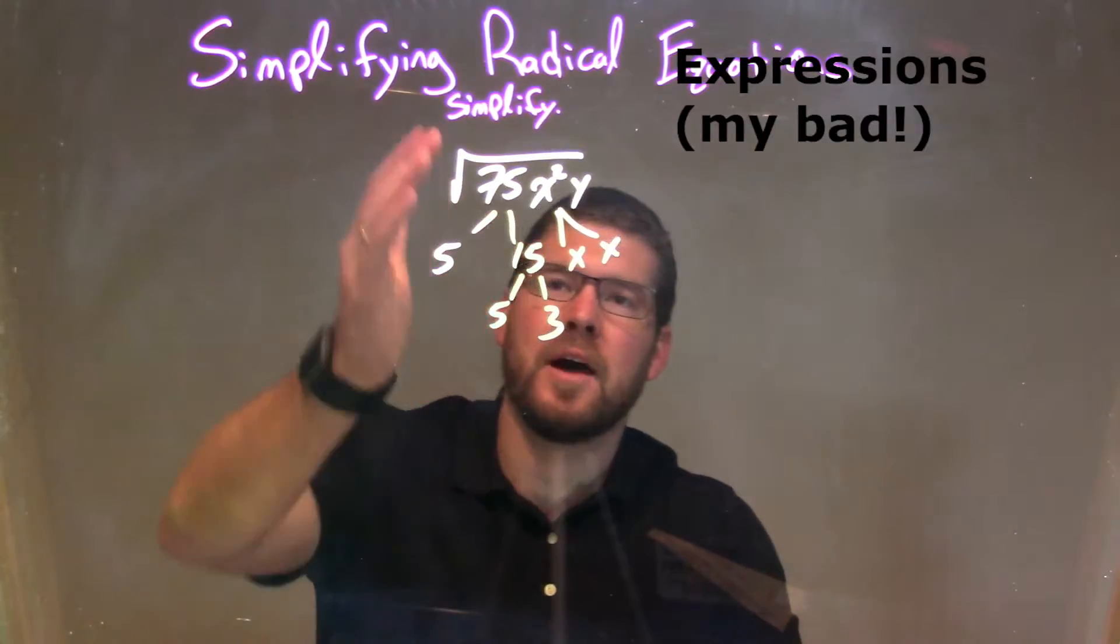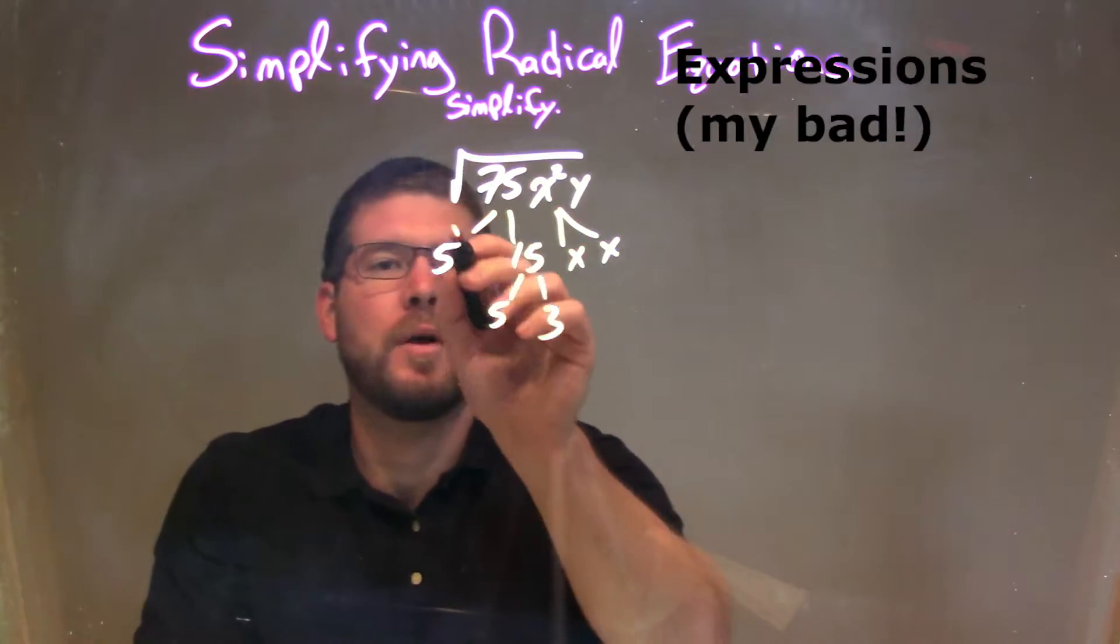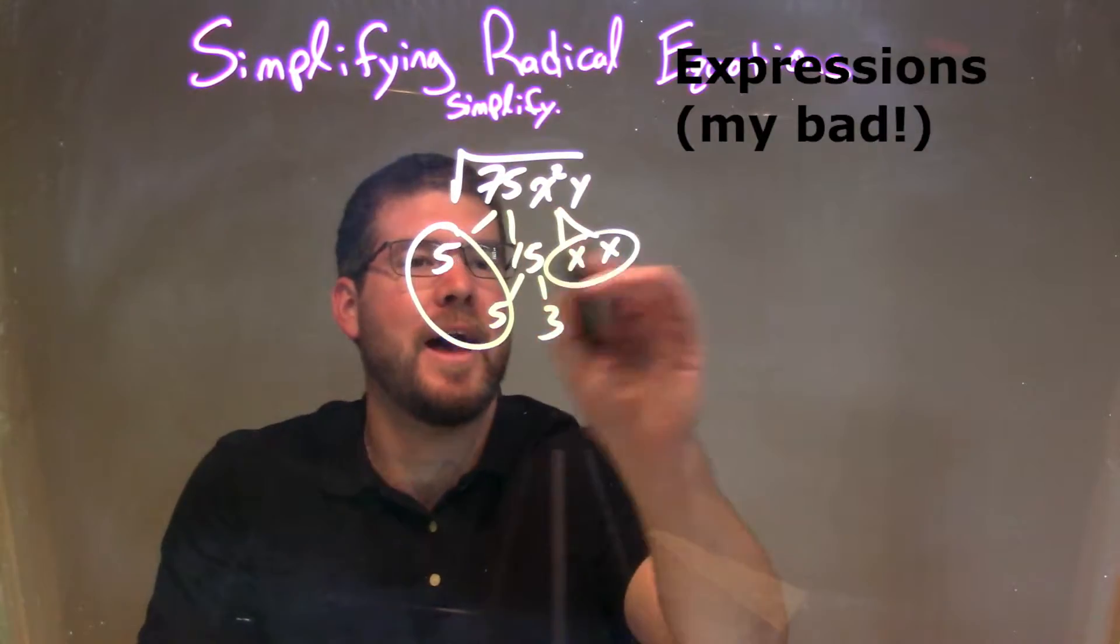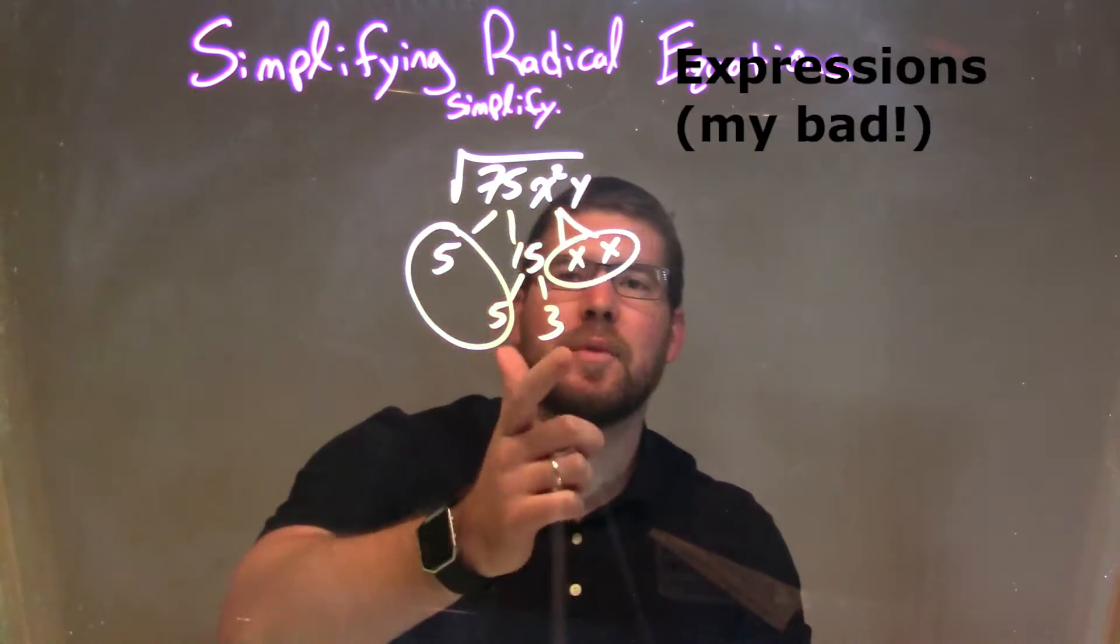So, now that I've broken this down, prime factorization here, I'm going to circle my pairs. I have a pair of 5s, and I have a pair of x's. What's left is my 3 and my y.